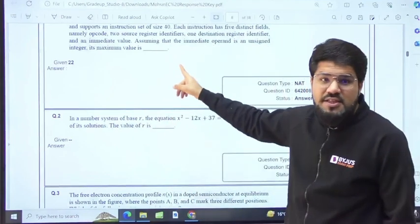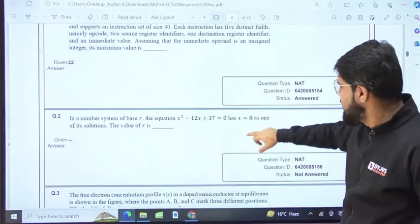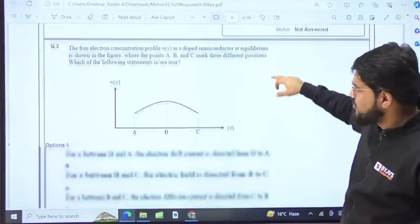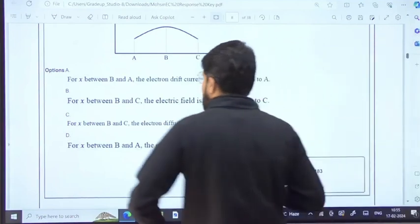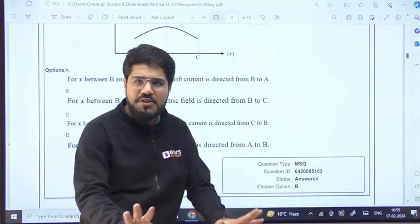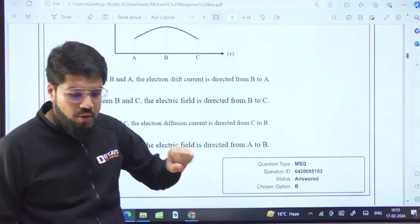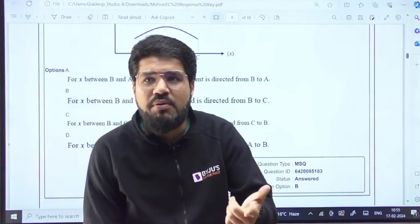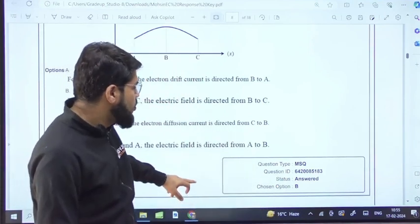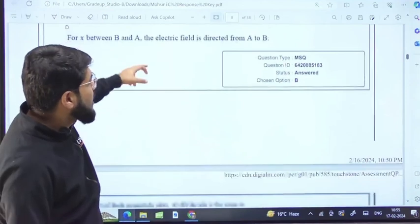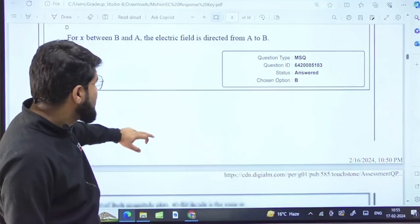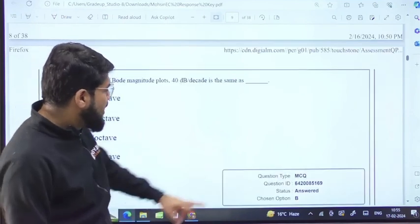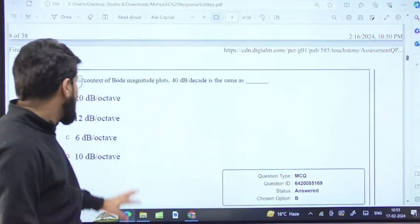This is not the official answer key - this is what you have answered. You have to tally it. Now look into this - this is an MSQ question, and the student has answered only one. It may be possible. MSQ also may be one correct or two correct, even in some MSQ one possibility is there. The type of question, whether you answered or not answered, everything has been mentioned there.